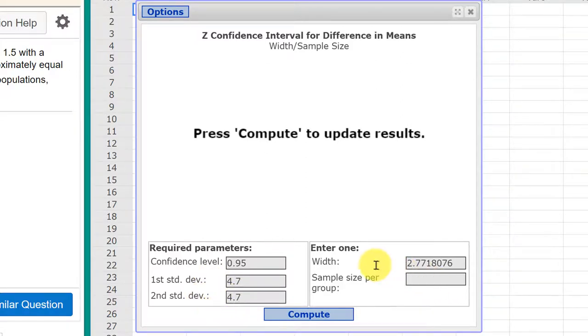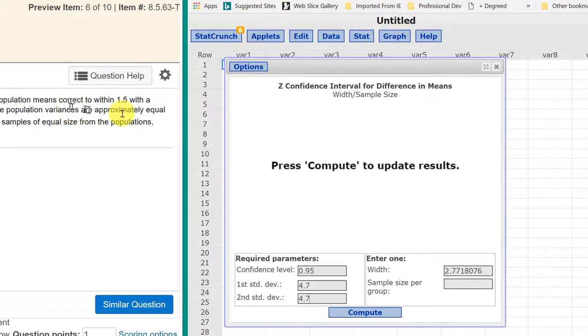StatCrunch needs the width of the interval, so we're given the margin of error there which is half the width, so our width would be 3. And then we click Compute.